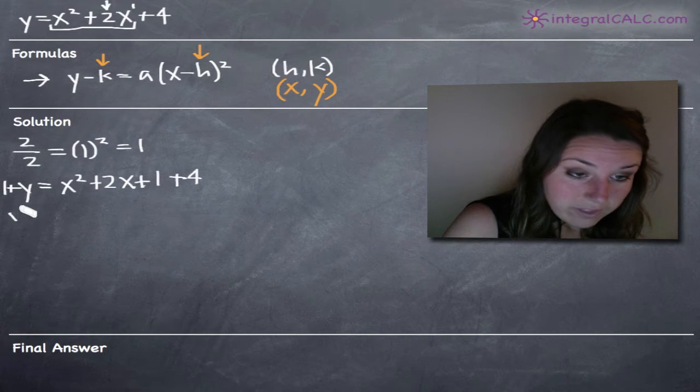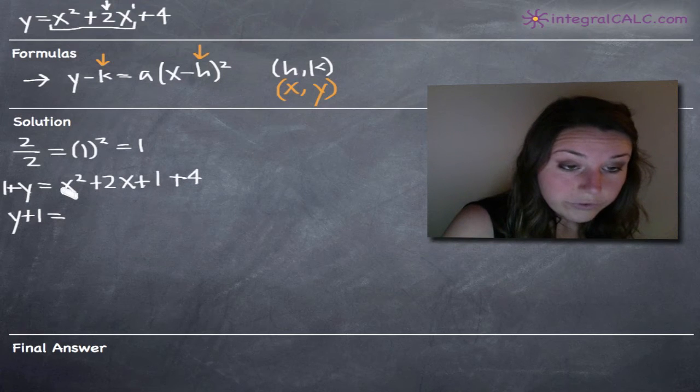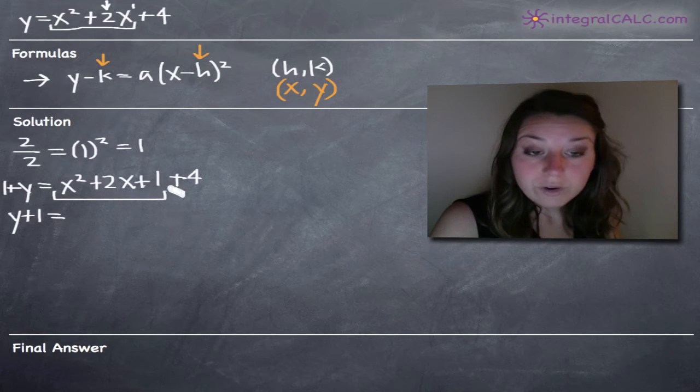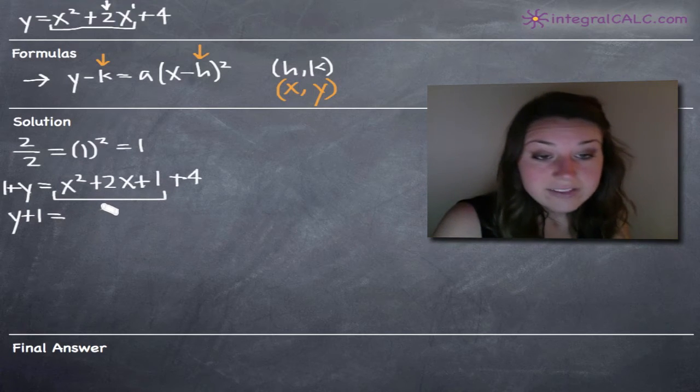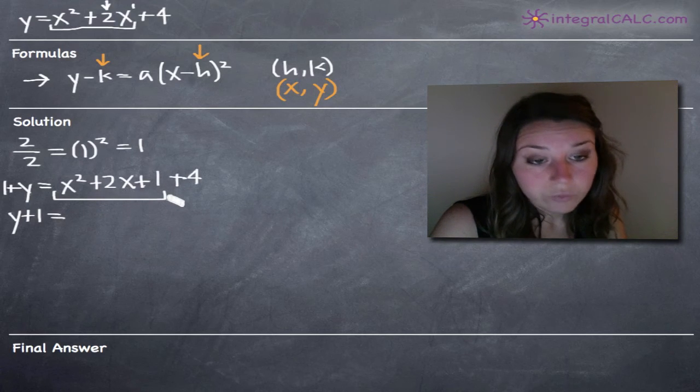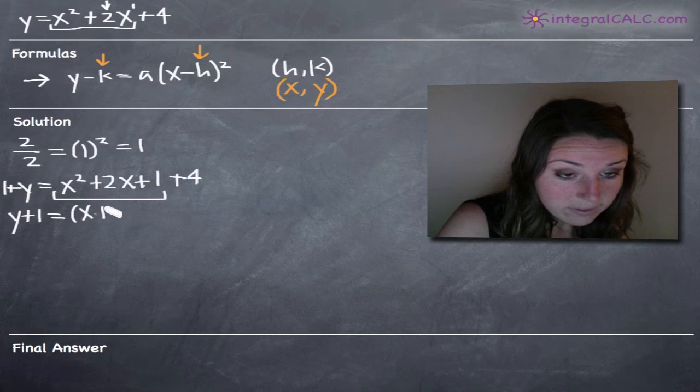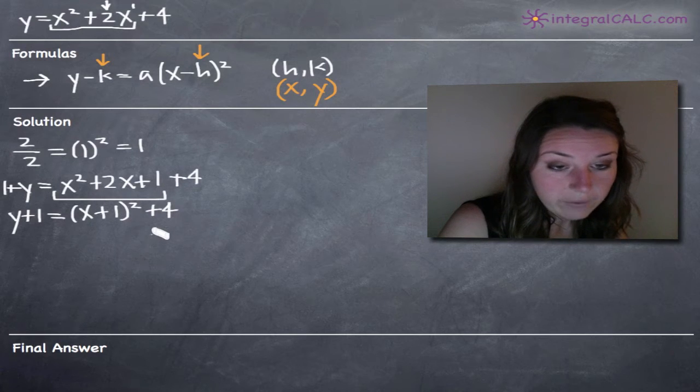When we simplify this, we'll have y plus one equals... and now that we made this a perfect square right here, we can factor it. So x squared plus 2x plus one is actually going to factor into x plus one times x plus one, which means we can write it as x plus one squared. And then of course we've got our plus four hanging out right here.